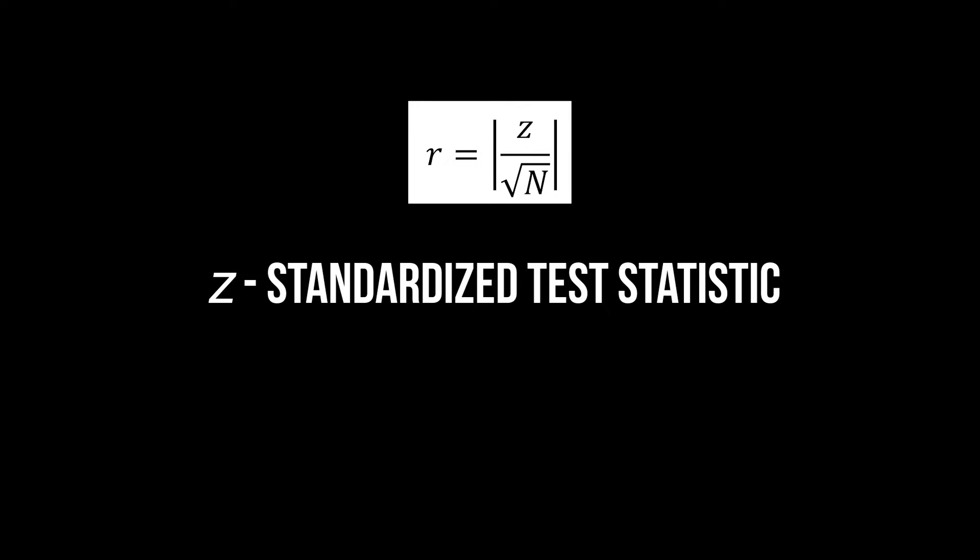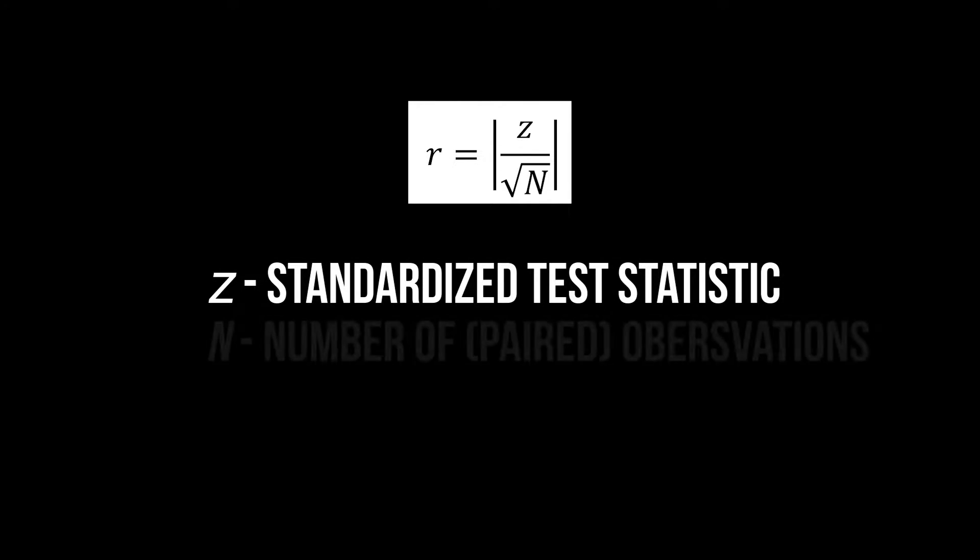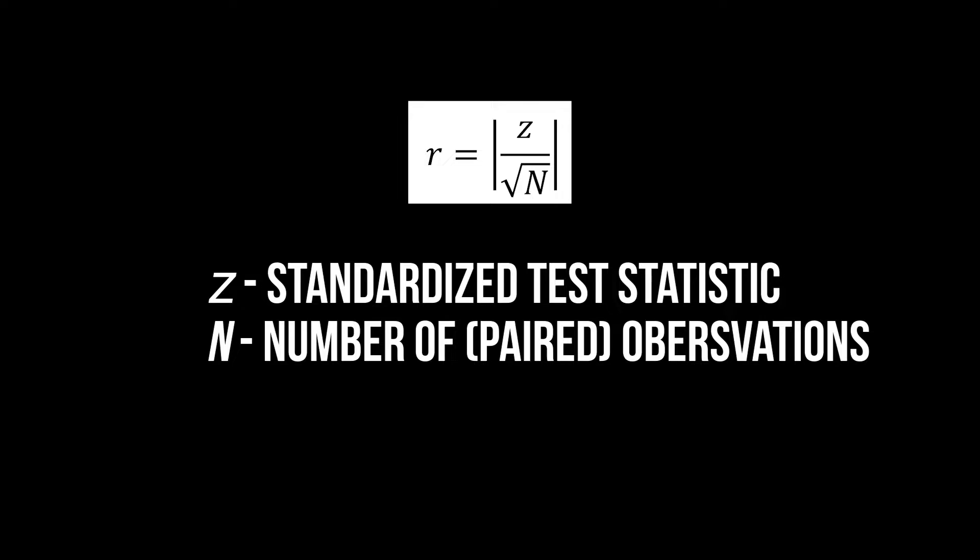However, to calculate the effect size R, a simple division is sufficient. For the effect size R, you need to divide the absolute value of the standardized test statistic Z by the square root of the number of observations.